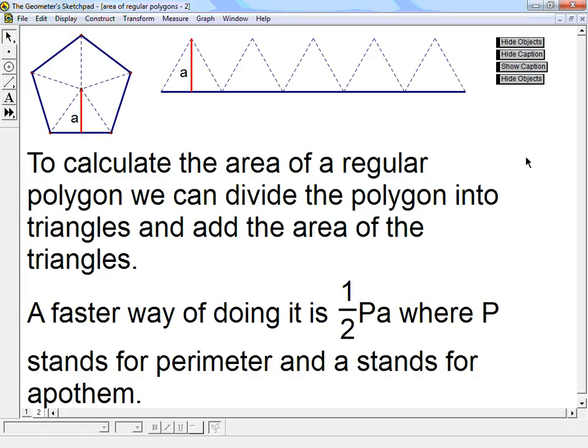So that way I take care of all the triangles at once. The faster way of doing it is one-half times P times A. Remember my perimeter is basically all the sides times A.